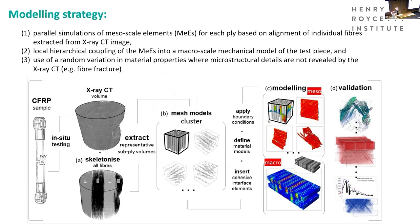This explains the modelling strategy. We took the X-ray CT of the volume of interest shown on the left, extracted fibre orientations for the different plies, created models of each fibre, and applied a series of boundary conditions to work out all the failure mechanisms that could occur. We then put those together into plies, and those plies into a composite. We tried to validate that with X-ray CT measured as a function of load.